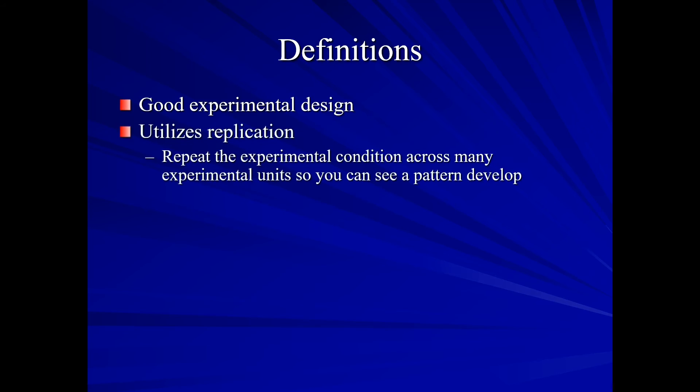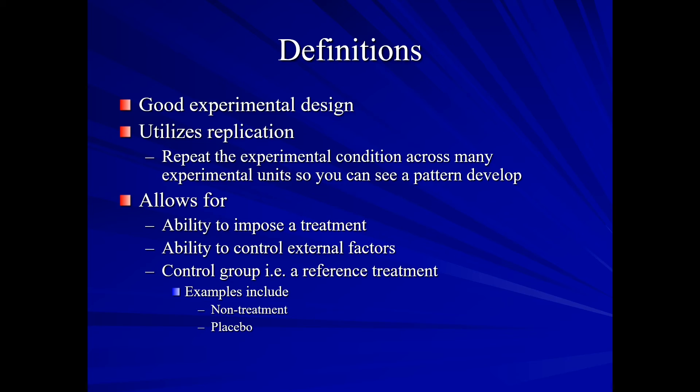A good experimental design uses what's known as replication, where the experimental condition is repeated across many experimental units so we can see our pattern develop. Well, what is an experimental unit? This is what the treatment is being applied to. A good experimental design also allows us the ability to impose a treatment, the ability to control external factors, and have a control group as a reference treatment. Now these control groups include non-treatment, such as: Perhaps we're going to design an experiment where we want to see if different fertilizer percentages of nitrogen help in the growth of corn. And in one row we may not put any fertilizer at all. Or a placebo. Placebos are seen in things like medical studies where perhaps one pill looks identical to all the others but there is no treatment in there. There is no active ingredient. It is simply a sugar pill.